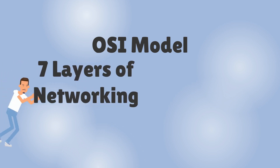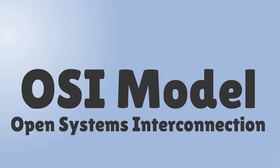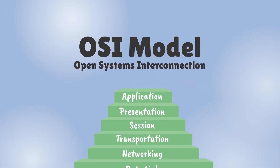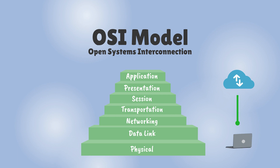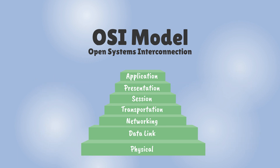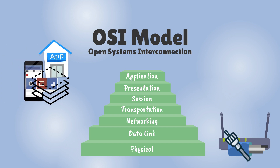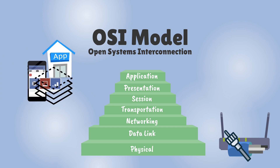OSI model: seven layers of networking. OSI, or Open Systems Interconnection, refers to a model for how applications communicate over a network. The model provides a visual design of how each layer communicates and is built on top of the other. The scope of the OSI model starts with the physical aspects like cabling and hardware up to applications that work with the device on the network.